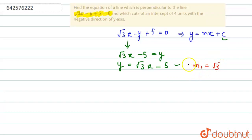Now, we have to find the line which is perpendicular to this line and cuts an intercept of 4 units in the negative direction of y-axis. So, we know that if two lines are perpendicular to each other, then their slope product is equal to -1. So, m₁ × m₂ = -1.